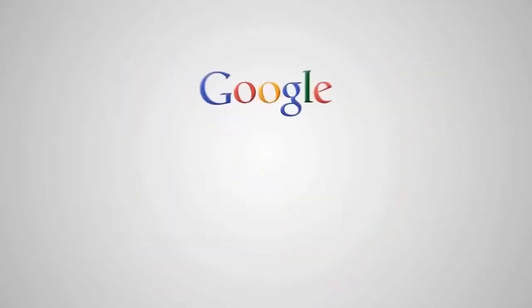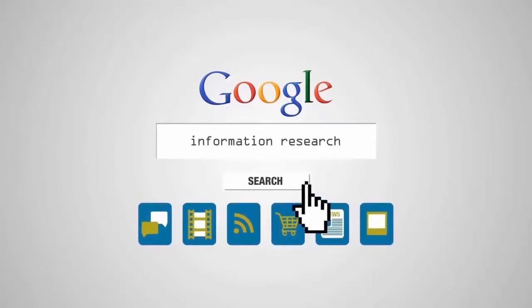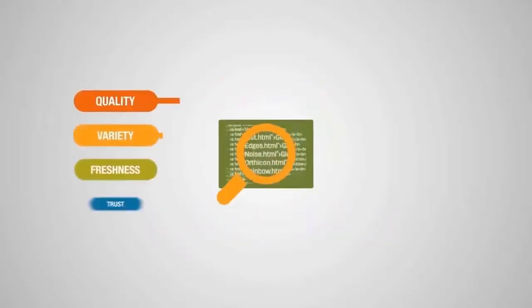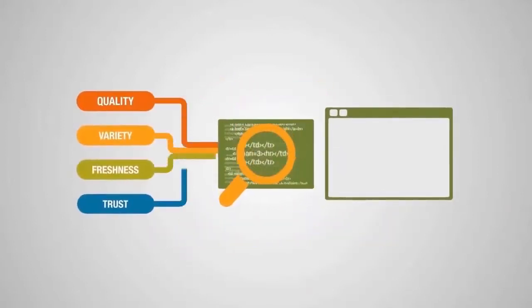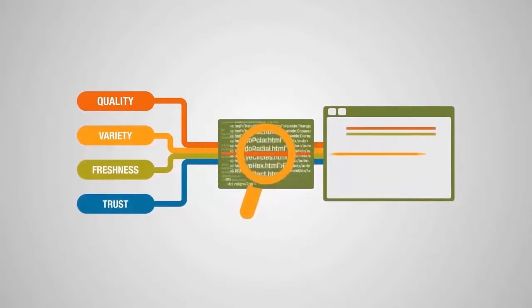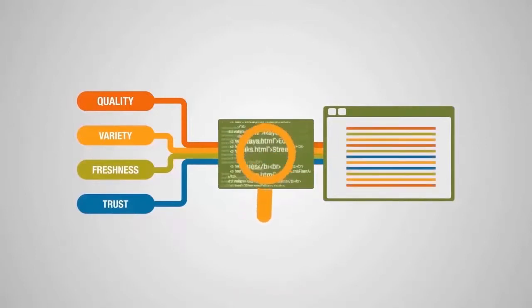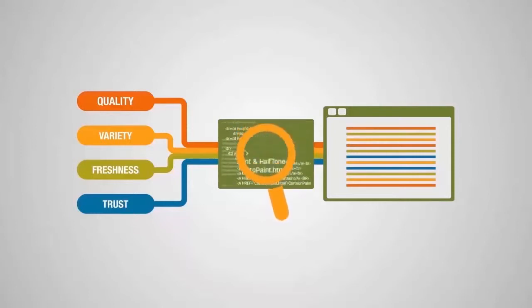Without getting too technical, here are some basic mechanics of how information like news stories, customer reviews, images, etc. are organized and presented in search results. Search engines place a strong importance on quality, variety, freshness, and trust. High quality, fresh, trusted information gains traction quickly and gets placed at the top. Low quality, untrusted content gets demoted and filtered out.